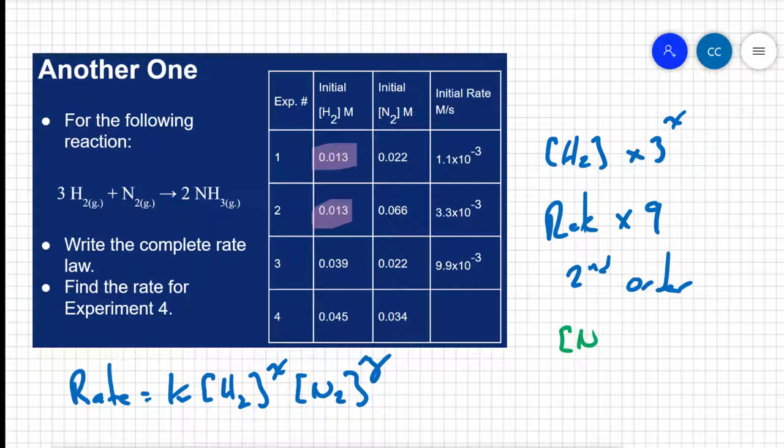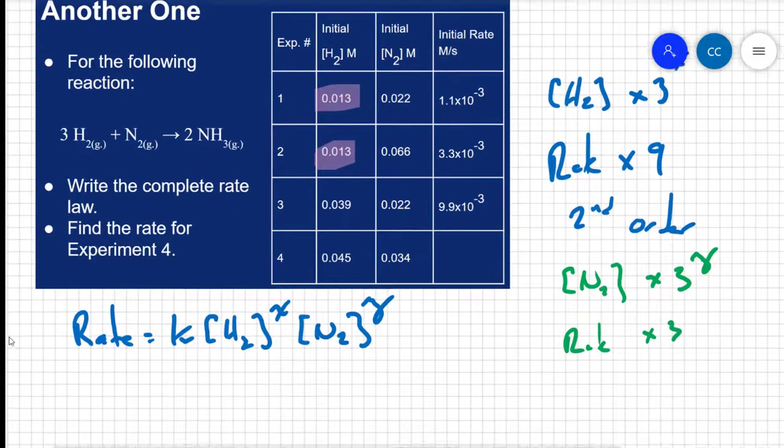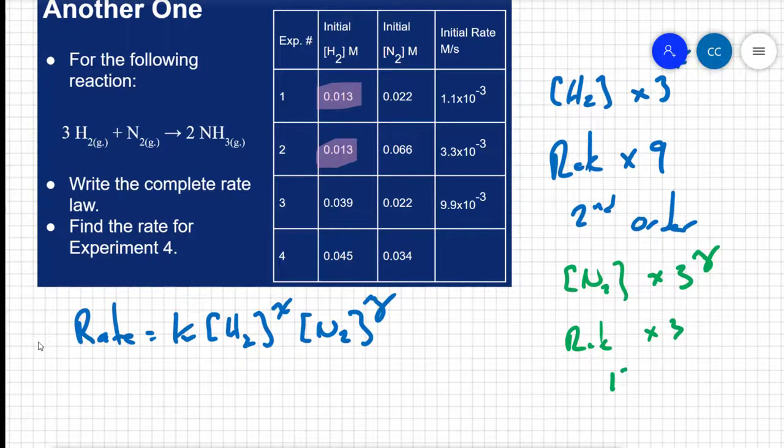So for my concentration of nitrogen, I'm increasing that by a factor of 3. And my rate is also going up by a factor of 3. So 3 to what power equals 3? Well, 1. So we now know that nitrogen is a first order reactant.